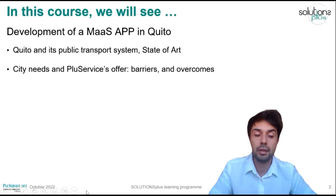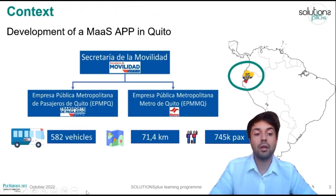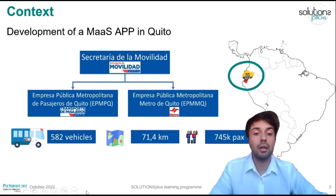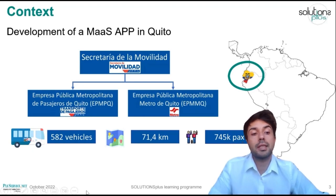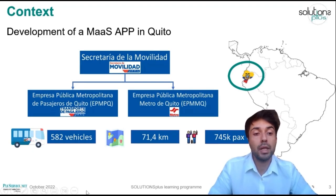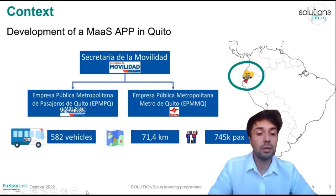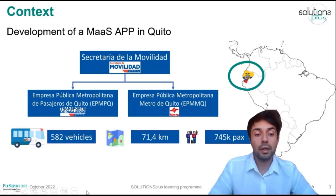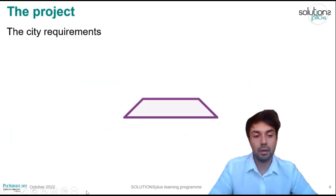A little bit of context: the city of Quito is the capital of Ecuador, with around two million inhabitants. The public transport system is led by the Secretaría de Movilidad, a public entity. Under its umbrella there are two main companies: Empresa Pública Metropolitana de Pasajeros de Quito, which runs the public bus system and BRT, and Empresa Pública Metropolitana Metro de Quito, which will soon operate the metro. The fleet has 582 vehicles running over 71.4 kilometers of network, serving around 745,000 passengers daily.